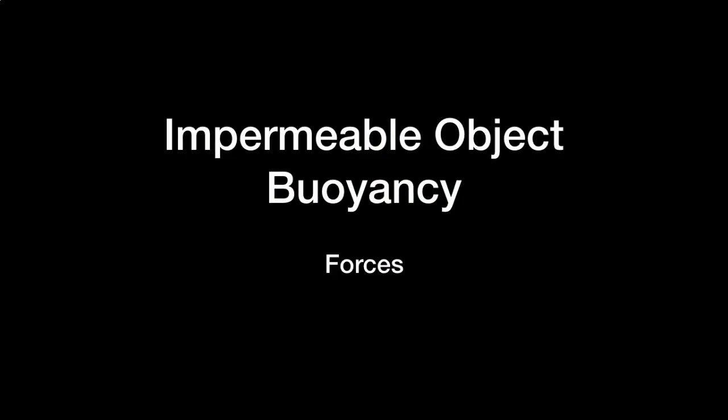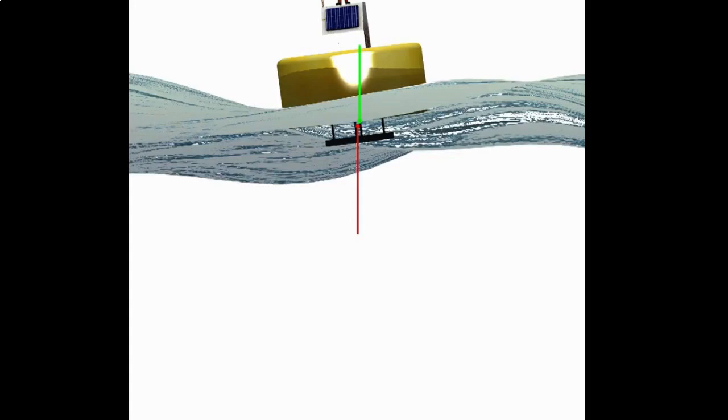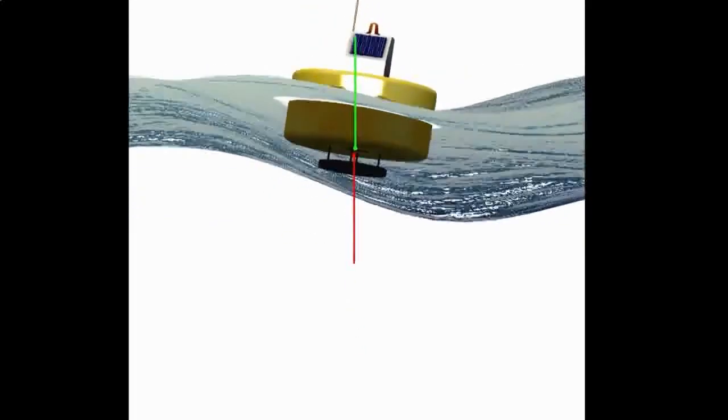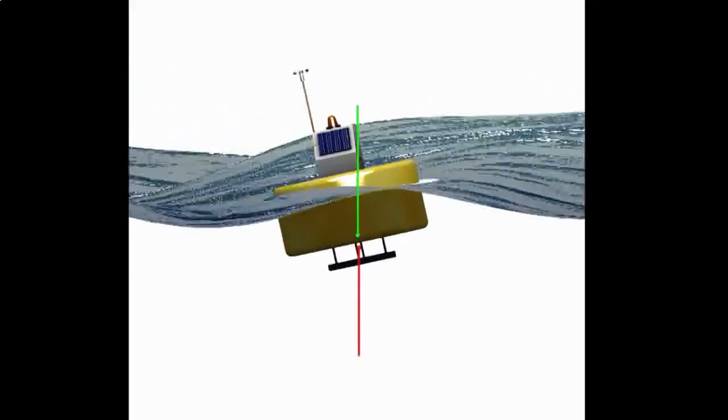Now we can see the two forces that define the movement. The green line shows the buoyancy force and the red line shows the weight force, each one applied at different positions.